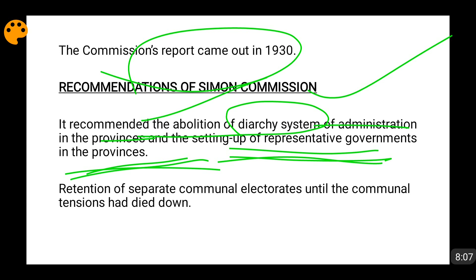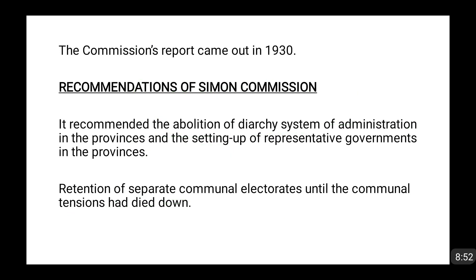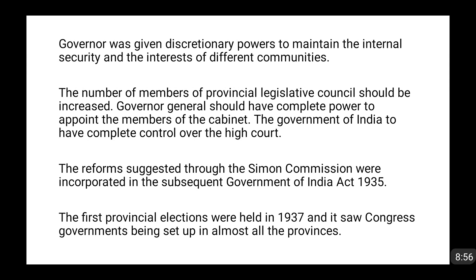The Simon Commission also recommended that separate communal electorates would remain until communal tensions had died down. At that time, the Indian National Congress was strongly against separate electorates while the Muslim League and B.R. Ambedkar seemed to favor them. Communal electorates were actually a major cause of communal tensions, and by continuing them the British were propagating communalism — essentially using this as a policy to sow division between communities.